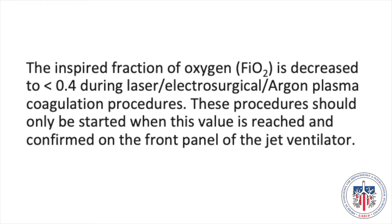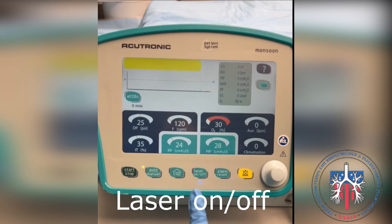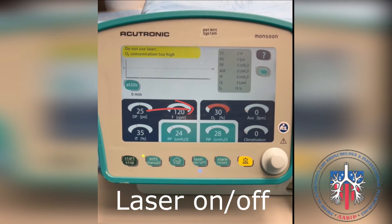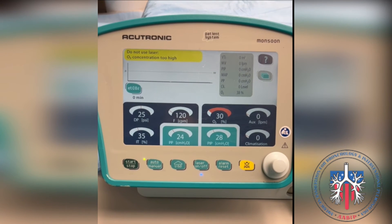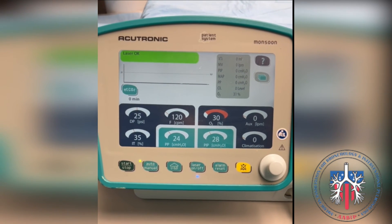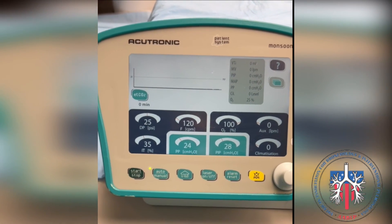The FiO2 is decreased to less than 40 percent during heat ablation procedures. These procedures should only be started when this value is reached and confirmed on the front panel of the jet ventilator. To reduce the FiO2, press the laser on-off button. The FiO2 will reduce to 30 percent. To increase the FiO2 back to 100 percent, press the laser on-off button.